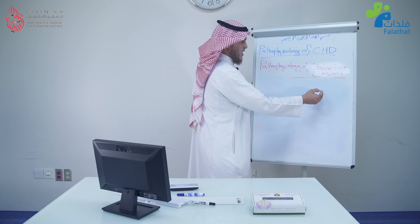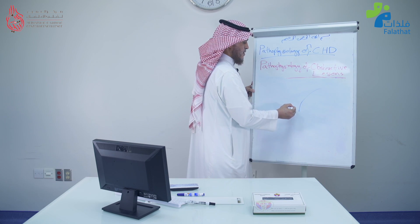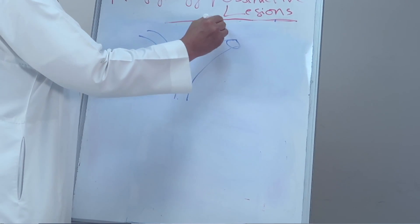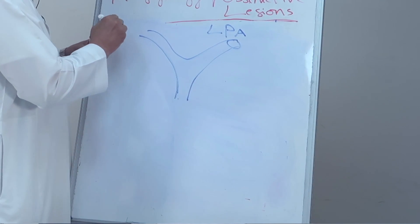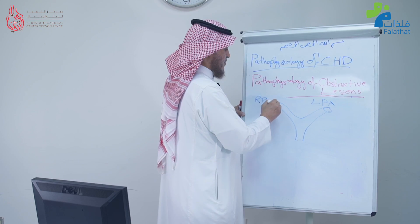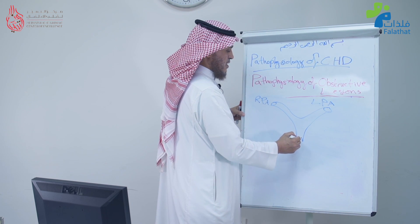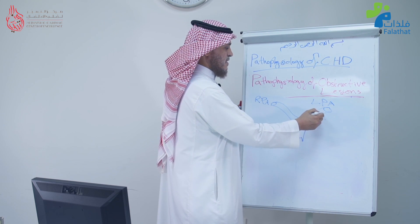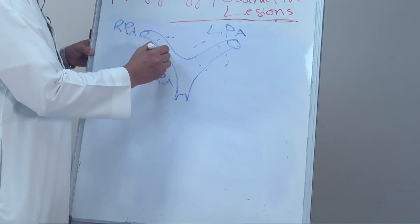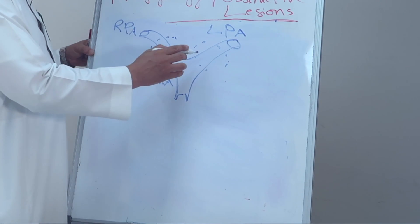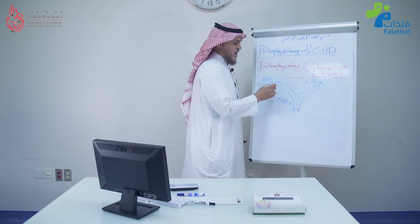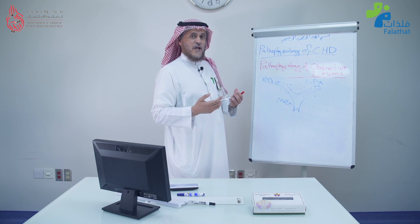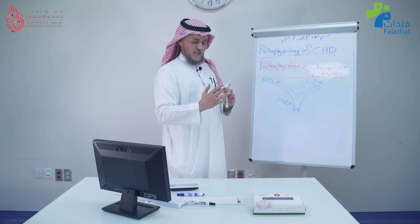This is the pulmonary artery tree again — left pulmonary artery, right pulmonary artery, and the pulmonary valve with the main pulmonary artery. Our area of interest is the branch pulmonary arteries, whether proximal or distal. The branch pulmonary arteries are blood vessels — there are no more cardiac chambers. They do not hypertrophy; they may dilate or become small.